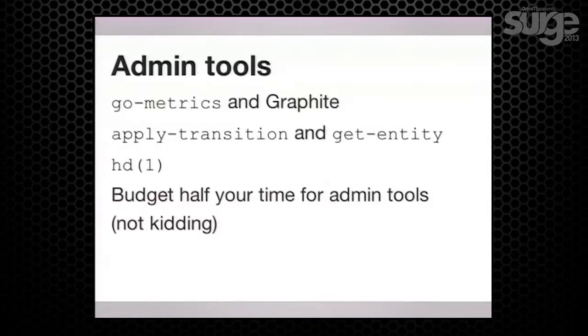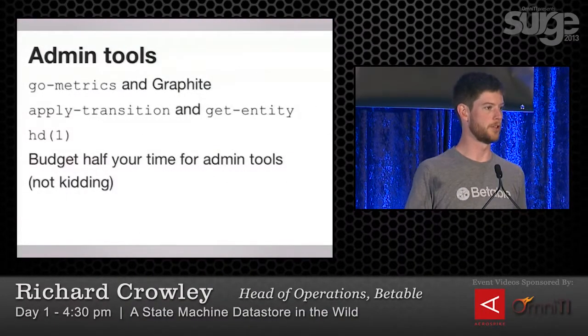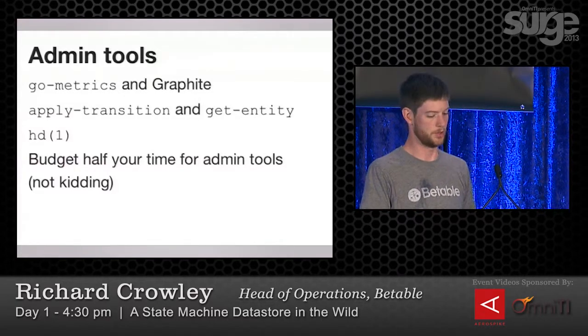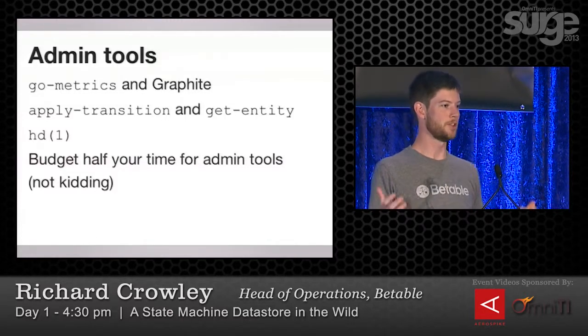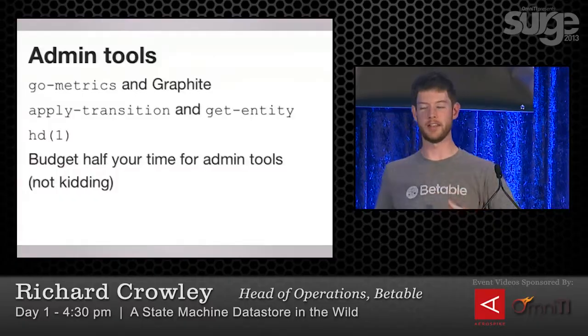The last thing that we goofed badly — and I think this happens all too often — is we just didn't spend enough time building administrative and introspective tools for this system. We have GoMetrics, we have everything instrumented to a ridiculous degree, and we have a couple of tools like being able to apply any arbitrary transition from the command line. But to look at entities on disk we're using hexdump, and to look at stuff at a higher level as how they fit into the application, we're dumping stuff into Cassandra and looking at log entries, and it's not effective. I think we need to be budgeting half our time to build admin tools to make our own lives easier, because when we're in a fire and have to hex-dump a file, it's going to take longer to fix the problem. You're never going to actually spend half your time on admin tools, but if you at least try to, you'll spend a non-zero amount of time, and that's actually the important thing.